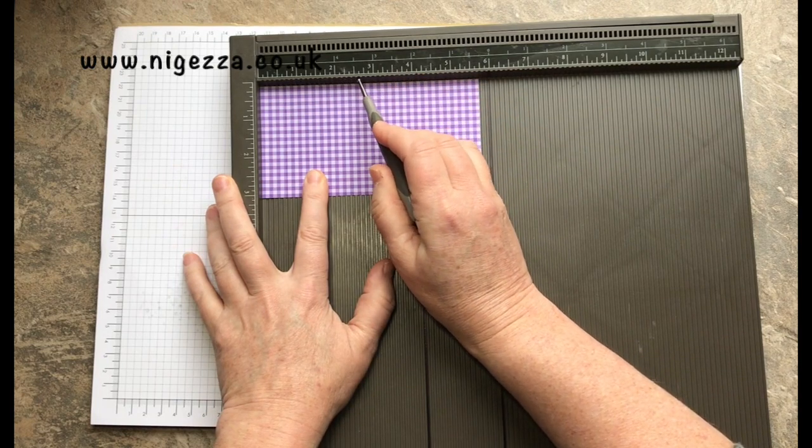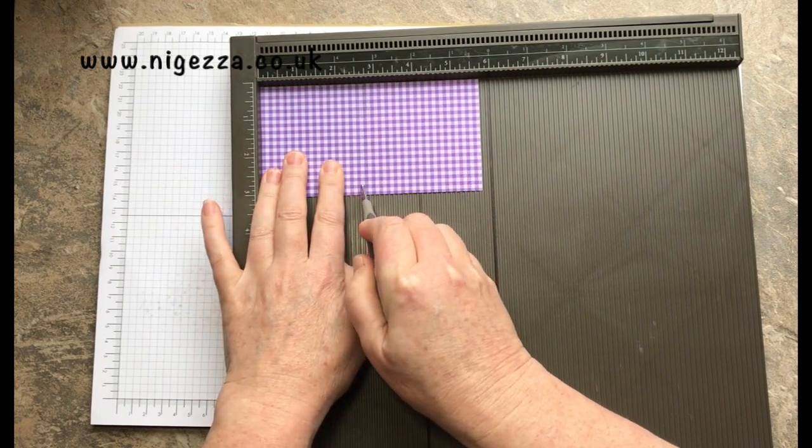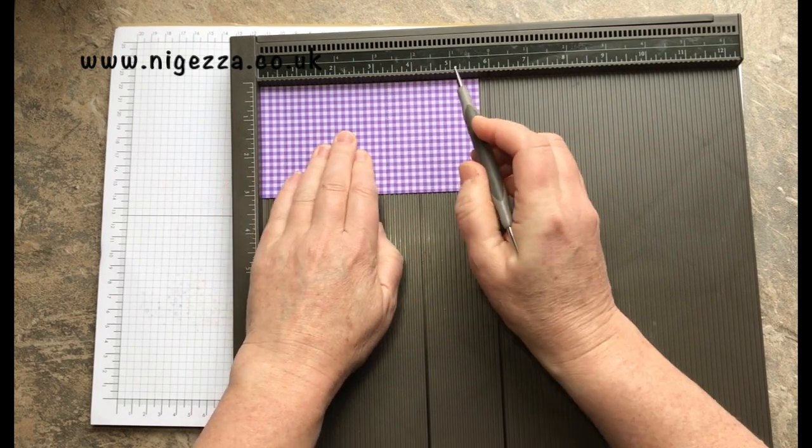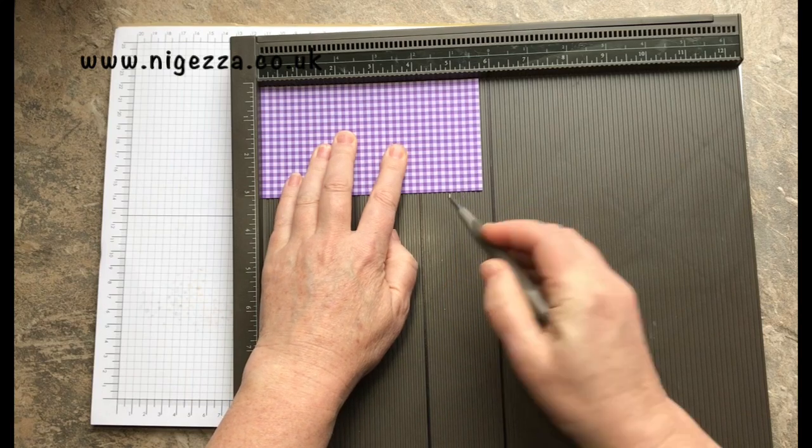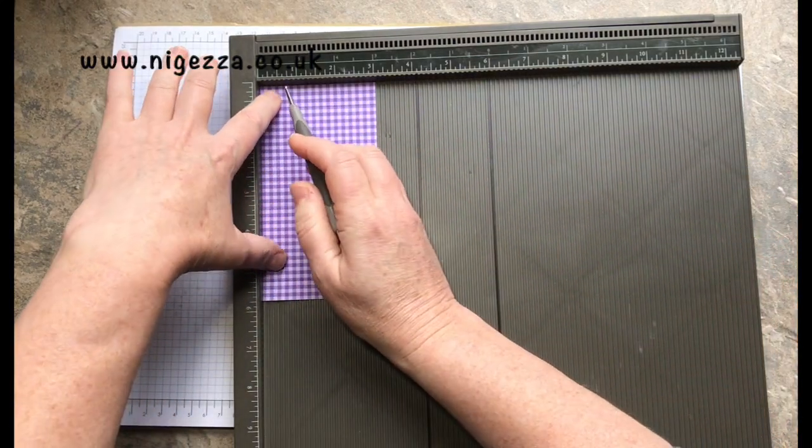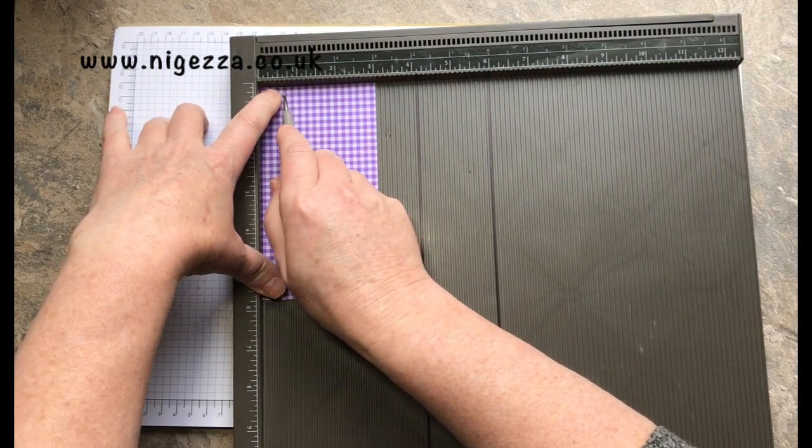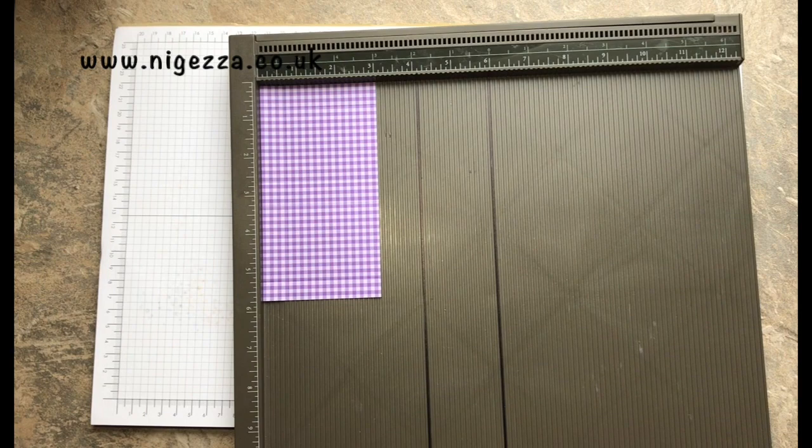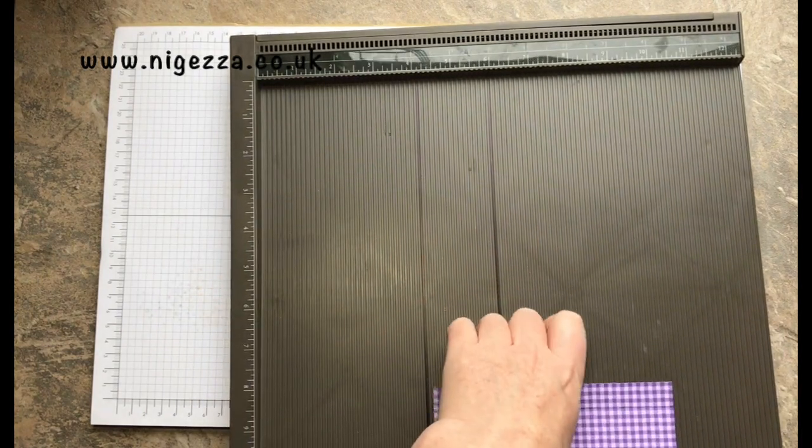We're gonna score on the long side at three eighths, five eighths, two and five eighths, three and a quarter, and five and a quarter.